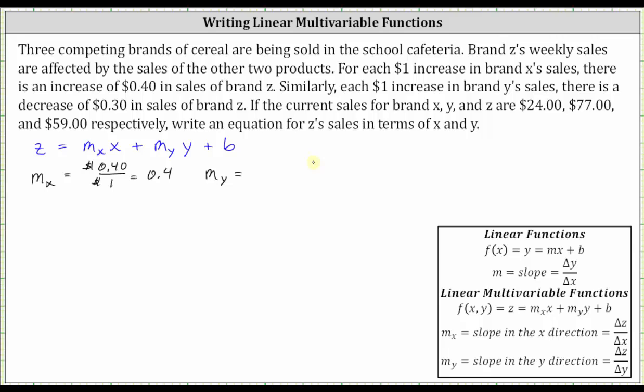For the slope in the Y direction, each $1 increase in brand Y's sales, there's a decrease of 30 cents in sales of brand Z. So the ratio of the change of Z to the change in Y is negative 30 cents (negative because it's decreasing) to $1, which simplifies to negative 0.3.